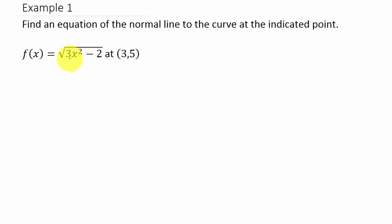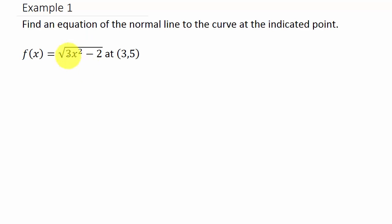When we take the derivative of the function and evaluate it at the point, that gives us the slope of the tangent line. Since we know that the normal line is perpendicular to the tangent line, the slope of the normal line is just the negative reciprocal of the slope of the tangent line. So what we need to do here is find the slope of the tangent line — I take the derivative.